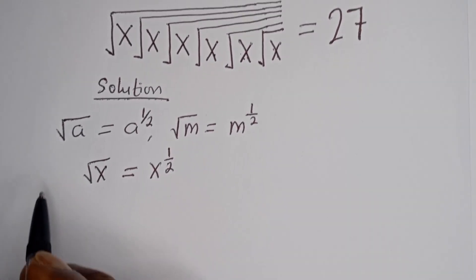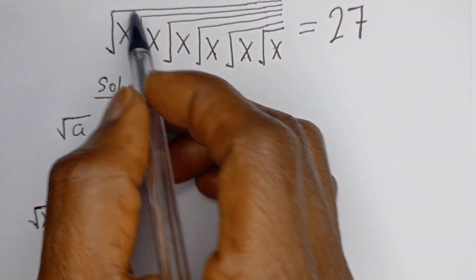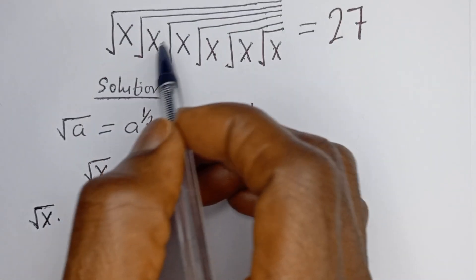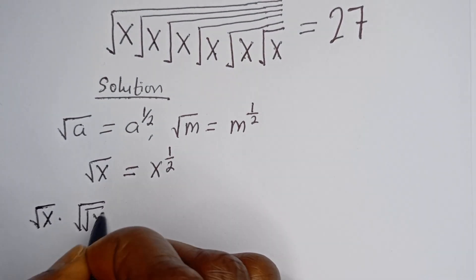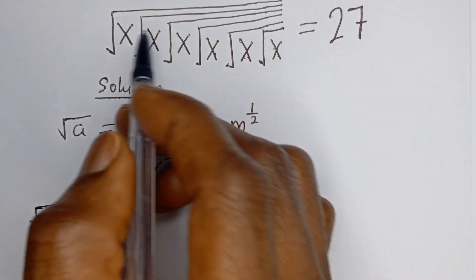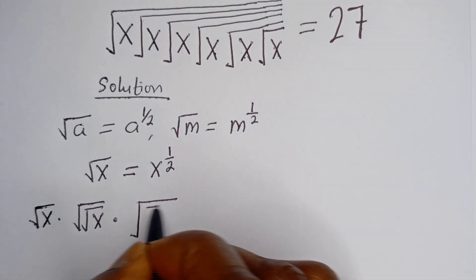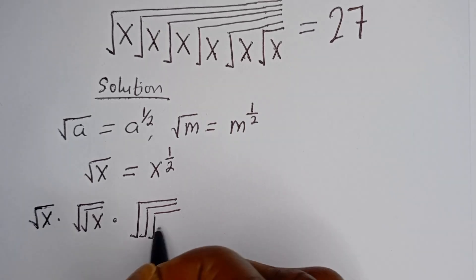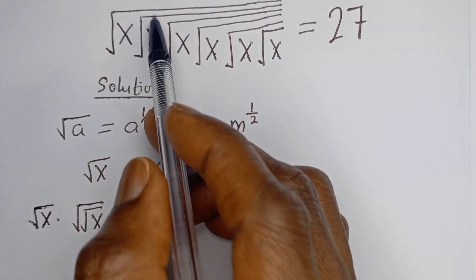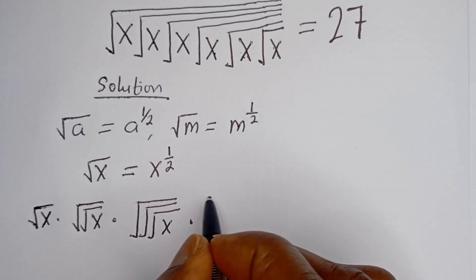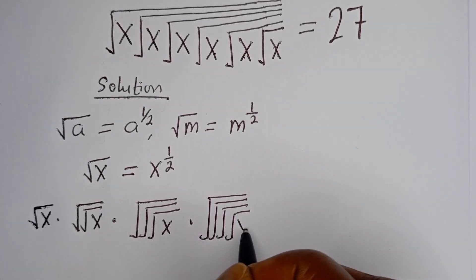Now let's split this. The first square root of s is just √s. The second term is square root of square root of s. The third term is square root of square root of square root of s. The fourth term is square root of square root of square root of square root of s — that is four nested square roots of s.